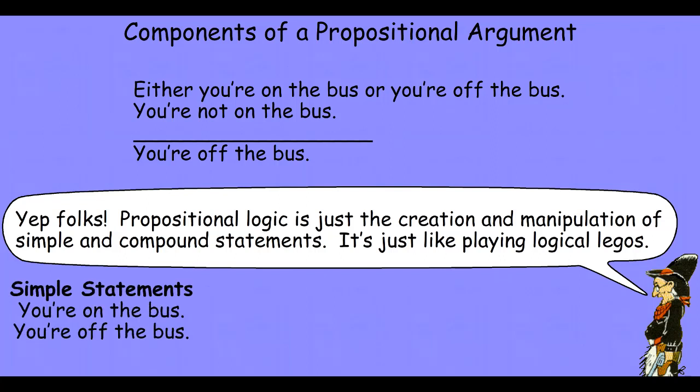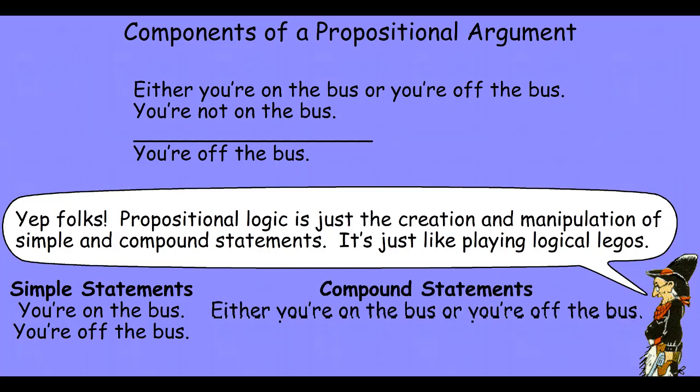The simple statements in our Casey argument are, you're on the bus, you're off the bus. Those are two statements. They're either true or they're false, depending on how the world is. Our compound statements modify those simple statements or relate them. So either you're on the bus or you're off the bus. One of these things at least has to be true. Compound statement.